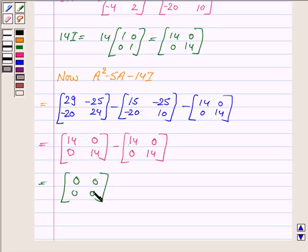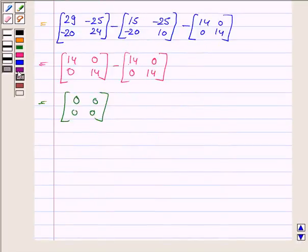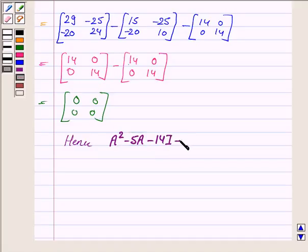Hence, A squared minus 5A minus 14I is equal to 0. 0 means the 0 matrix. So this is proved now. Bye for now, take care. Hope you enjoyed the session.